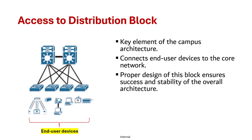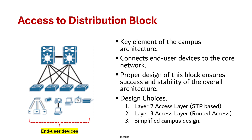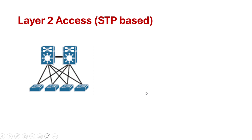There are three basic design choices for configuring the access distribution blocks. First is layer two access layer, which is STP based. Then there is layer three access layer, which is routed access. And then we have simplified campus design in which we use switch virtualization technologies. While all three designs use the same basic physical topology and cabling, there are differences in where the layer two and layer three boundaries exist, how network topology redundancy is implemented, and how load balancing works.